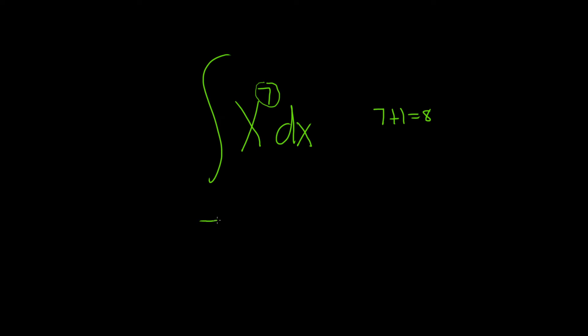And so what you do is you drop the integral sign, you drop the dx, you write the x, and so you add 1. So 7 plus 1 is 8, so you put an 8 here, and then you also divide by that number.